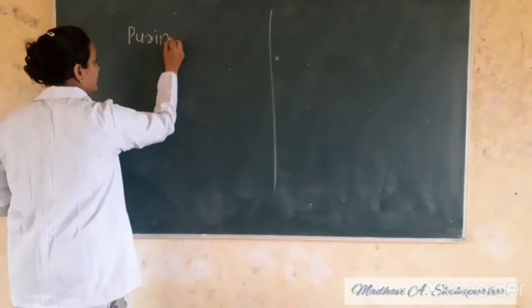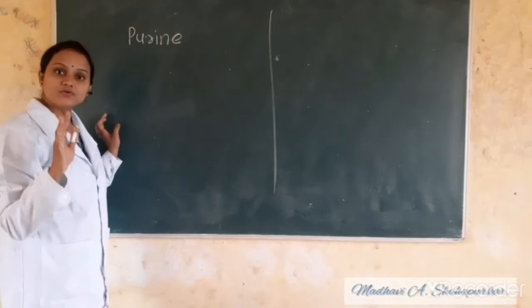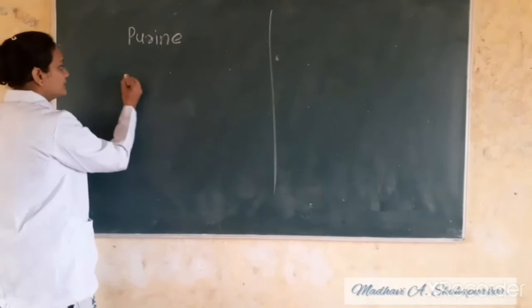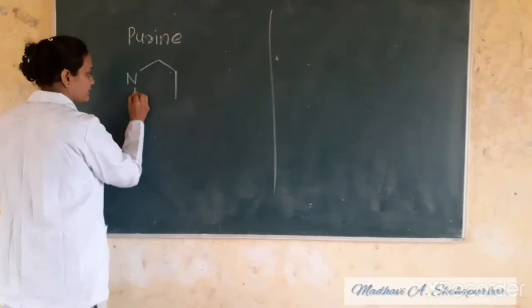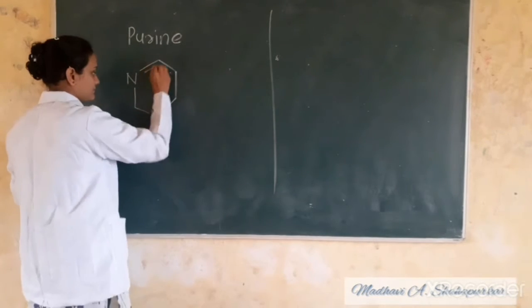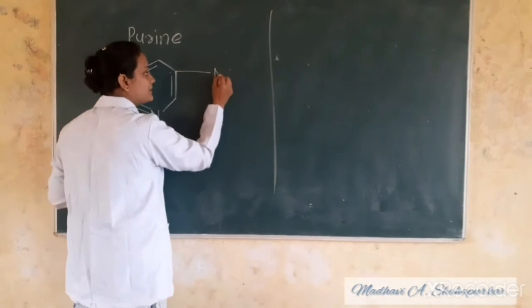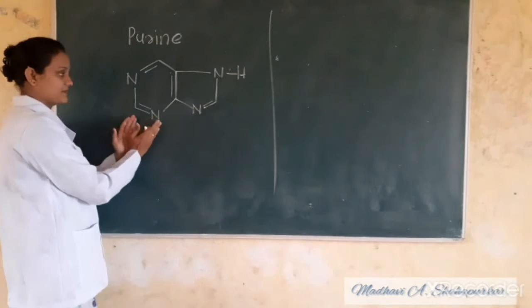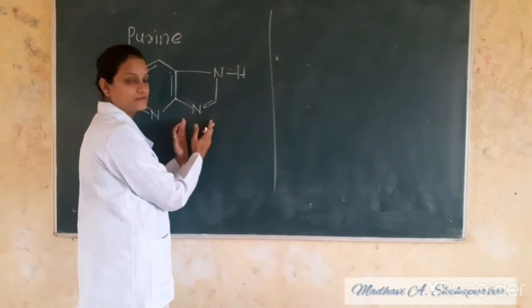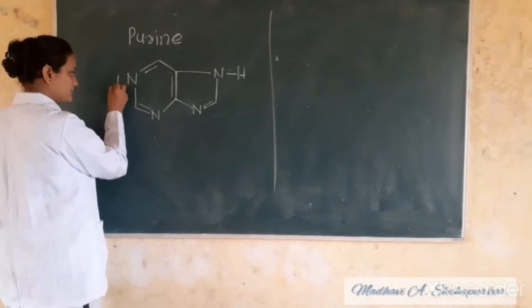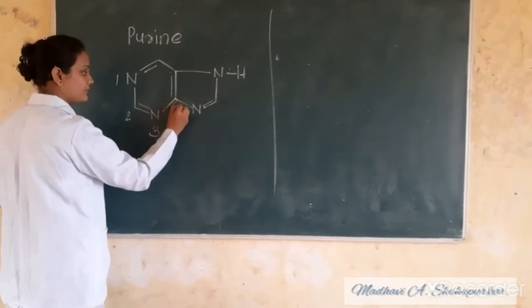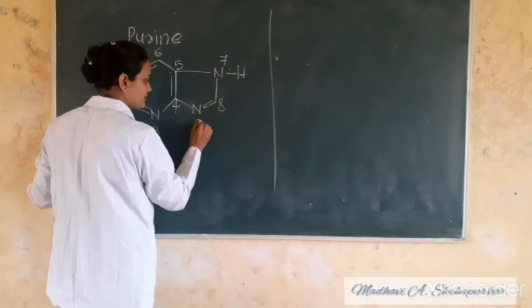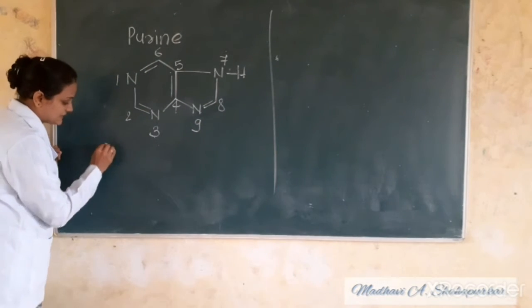First, Purine. Purine is the structure we will explain. Purine is a 9-membered ring. We will start numbering from here: 1, 2, 3, 4, 5, 6, 7, 8, 9. Purine is a 9-membered ring.